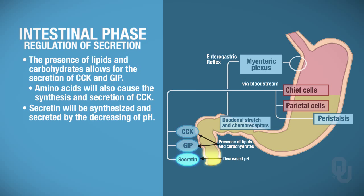And then secretin — here it's showing a decreased pH, which is an acidic condition. That's going to cause the synthesis and secretion of secretin, again from the duodenum and jejunum.